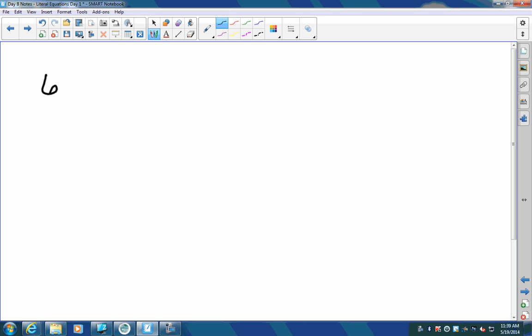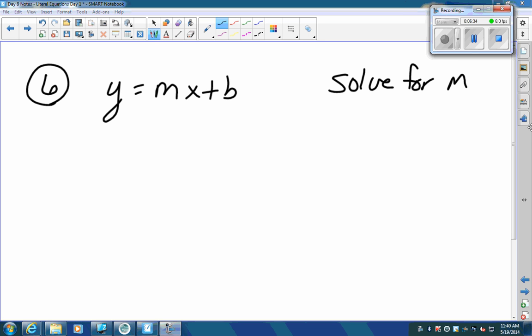Alright. Number six, Y equals MX plus B. I want you to solve for M. Solve for M. Right here. To get M by itself, you need to subtract B from each side first. Y minus B equals MX.